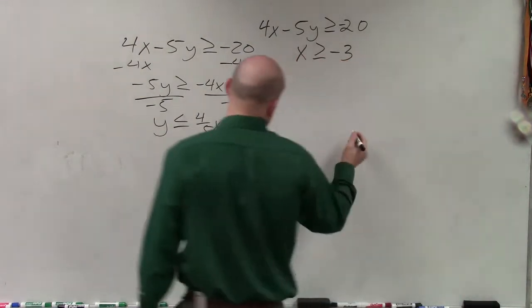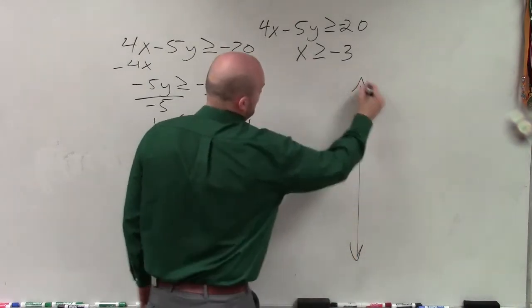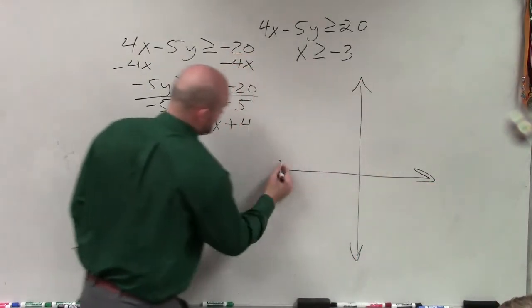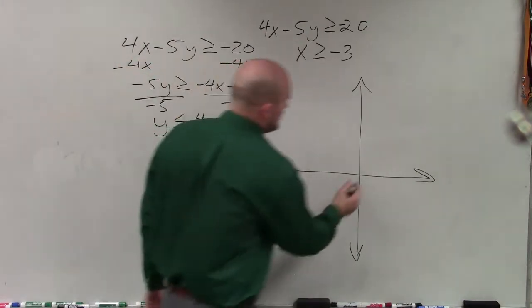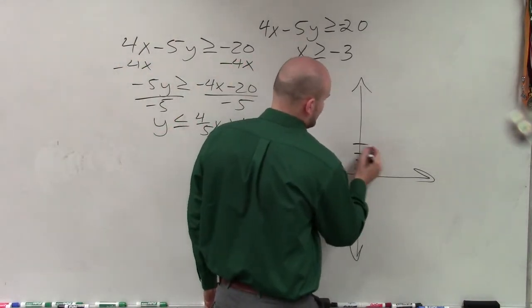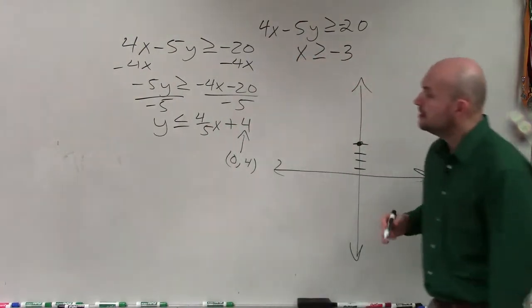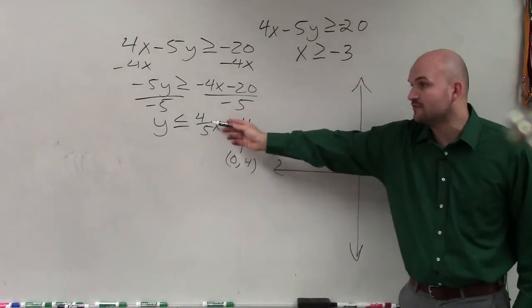Alright, so now let's go ahead and graph that. Again, just going through our steps, ladies and gentlemen. Here is our y-intercept, which is the coordinate point 0, 4. So I go up to 4, 1, 2, 3, 4, and I make a nice big dot. My slope, again, is a fraction.